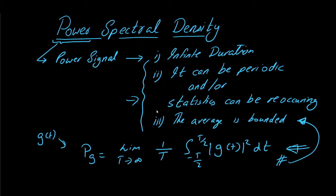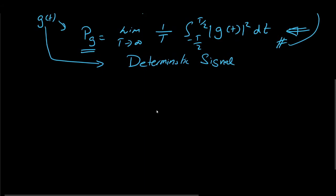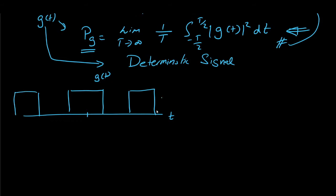Now, let us link this with a given signal g of t and we say that this g of t is a deterministic signal. And let us assume that it is simply a square wave, periodic square wave. For this deterministic signal, we can find the Fourier series coefficients.